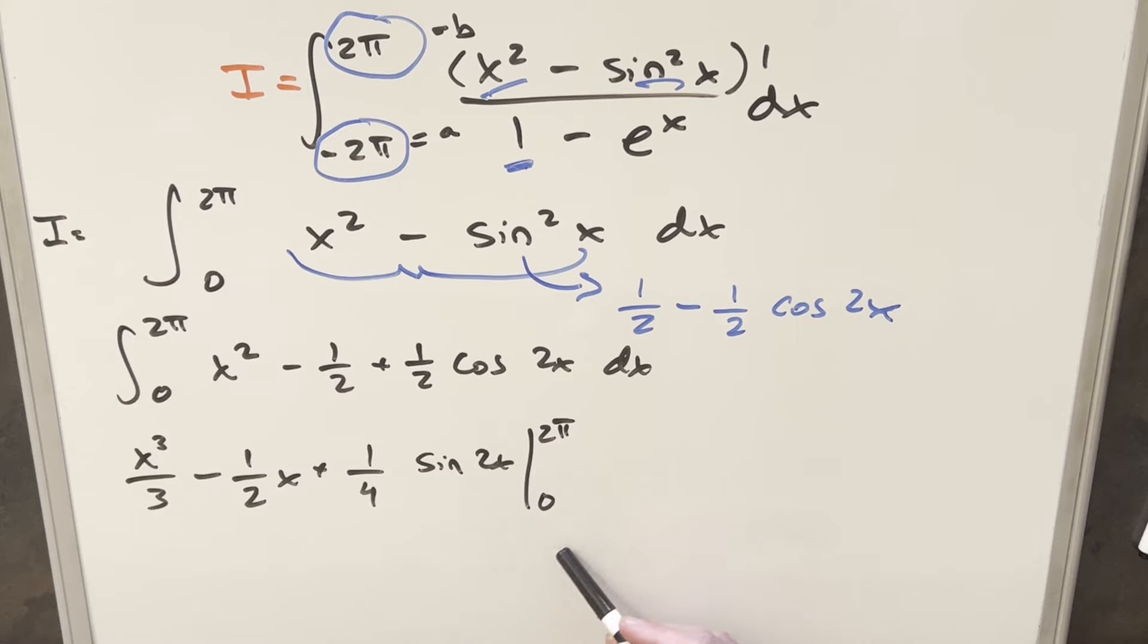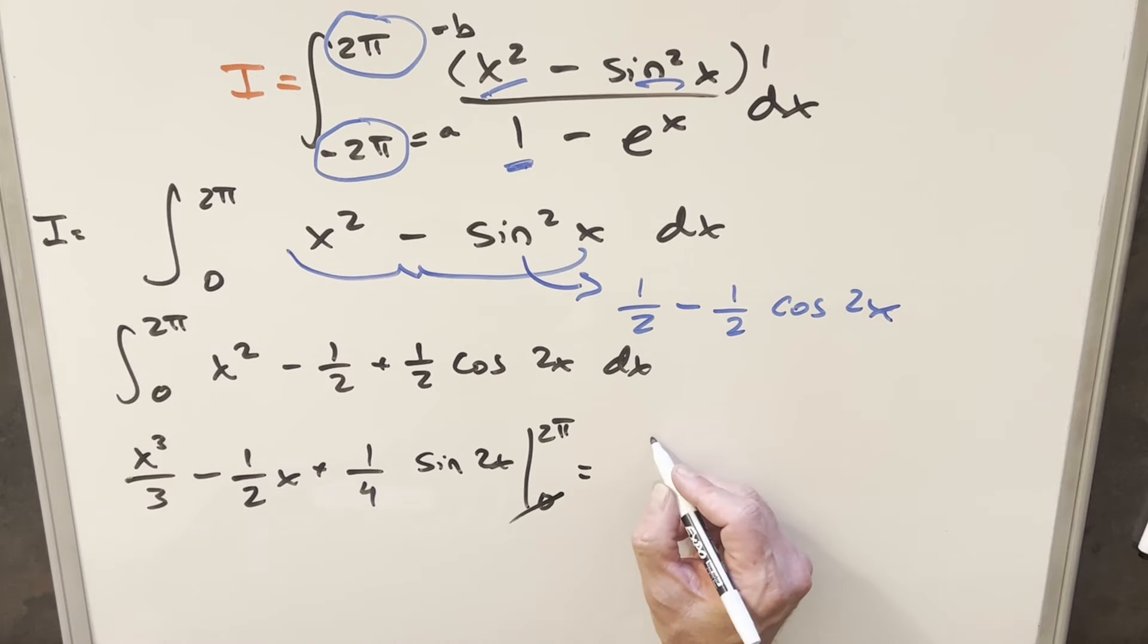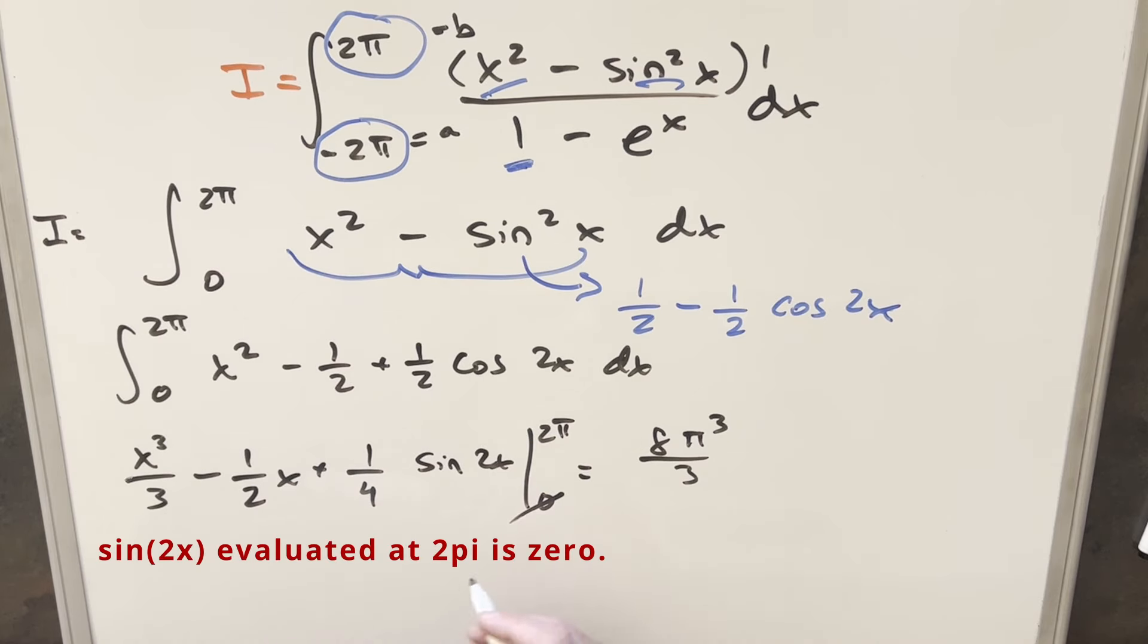Now just notice when you plug 0 in, it's going to be 0 everywhere, so let's ignore that part and just plug in 2π. So first, plugging in 2π here, this is going to become 8π³/3. And then here you plug 2π in, 2π times 1/2 is just π. So for my final solution to this, we just have 8π³/3 - π.